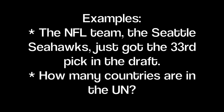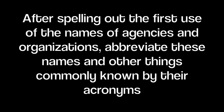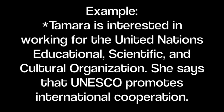The NFL team, the Seattle Seahawks, just got the 33rd pick in the draft. How many countries are in the UN? After spelling out the first use of the names of agencies and organizations, abbreviate these names and other things commonly known by their acronyms. For example: Tamera is interested in working for the United Nations Educational Scientific and Cultural Organization. She says that UNESCO promotes international cooperation.